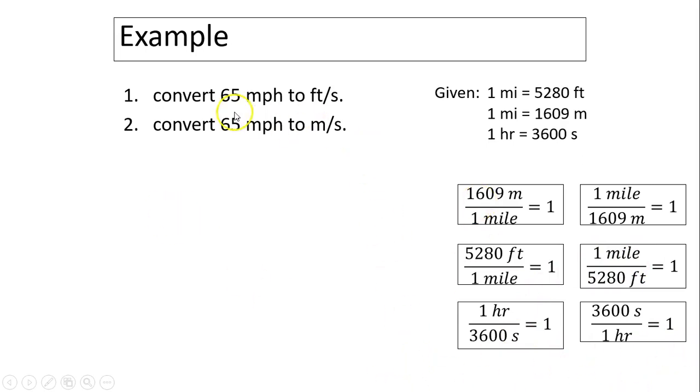Which ones do we choose? To convert miles into feet, we have to use miles into feet, the first one. 5280 feet divided by one mile equals one. This way mile cancels. To convert hours into seconds, we have to get rid of hours because per hour, hour is on the bottom. You have to multiply the hour on top.